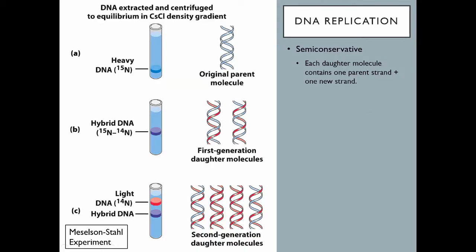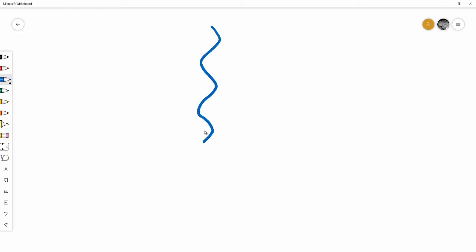Some basic concepts about DNA replication: the first thing to know is that DNA replication is what we call semi-conservative. That means you always start with one DNA molecule containing two strands. After replication, the two new daughter molecules each contain one strand from the original parent and one strand that is new. That continues every round of replication — so this is our parent DNA molecule.